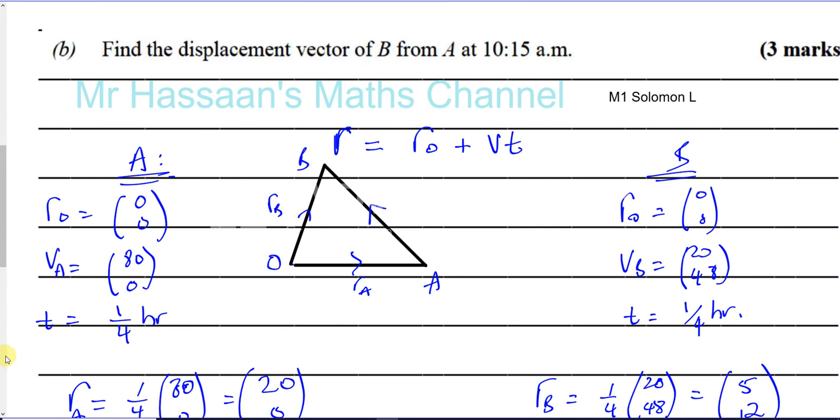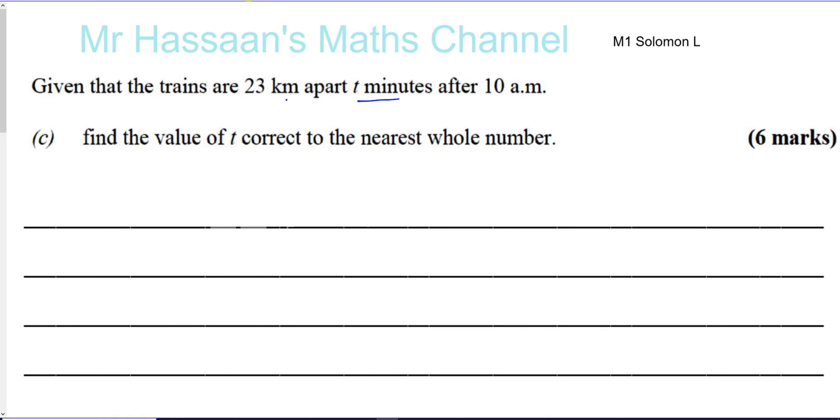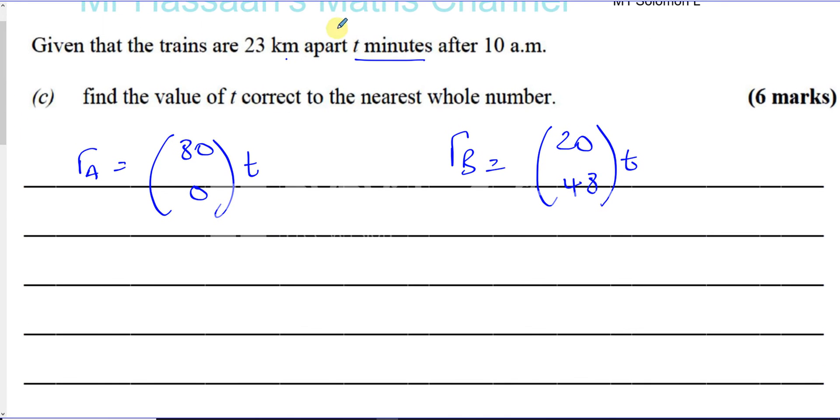Now part C is over here. It says given that the trains are 23 kilometers apart, T minutes after 10 AM, find the value of T correct to the nearest whole number. So let's go back to the position vectors at any time T. That was for A, it was (80, 0) times T. And for B it was (20, 48) times T. So T minutes after 10 AM. We're going to find it in minutes. Let's just change this to capital T because they want the T in minutes and we've been using the T in hours. So let's just, for this part of the question, call it capital T and we'll change it at the end in terms of minutes.